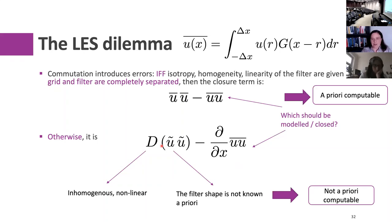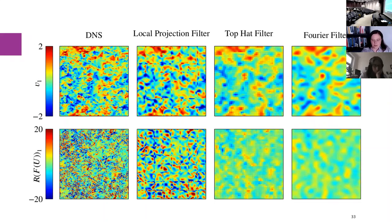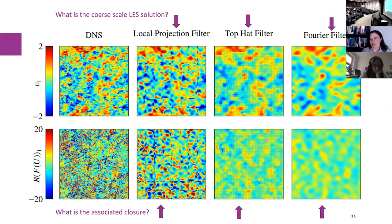The big drawback of the true closure term is that it's not a priori computable because it's generated by your discretization. If you've ever done implicitly filtered LES and tried to compare your results to your neighbor's results, you end up with quite a mess. To drive this point home: I've applied different filter shapes to a DNS field a priori, and you can see that both the LES solution and the Reynolds stresses look very different. An LES is something you need to define very precisely.